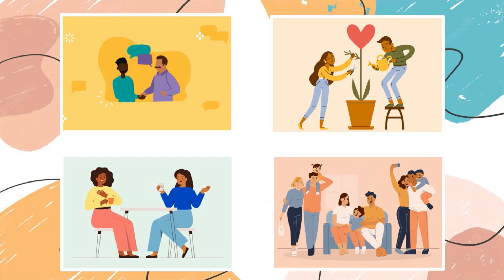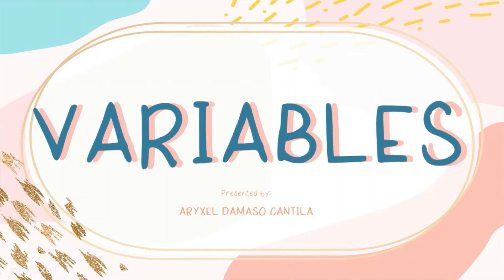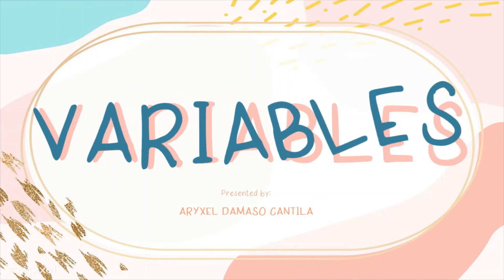Do you know why I've shown you these pictures? Actually, in our topic today, we will be talking about relationships and research. But what do we mean by that? In research, it is important to understand relationships between two or more things that are being studied. And these things that I'm talking about are our topic for today, and they are called variables. It is important for us to learn the relationships between variables to draw the right conclusion from a statistical analysis.